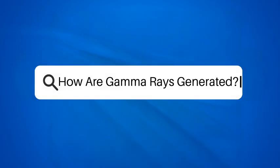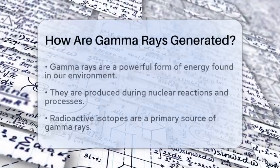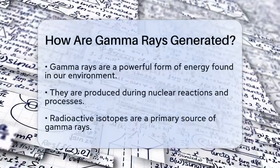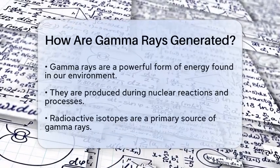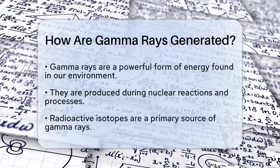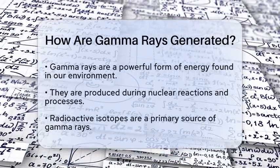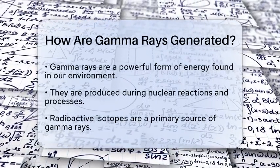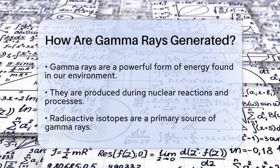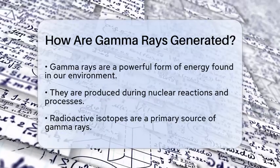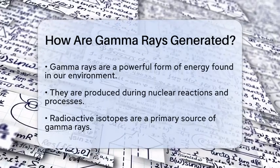How are gamma rays generated? Imagine standing in a dark room filled with invisible energy. You might not see it, but it is all around you, waiting to be discovered. One of the most powerful forms of this energy is gamma radiation. But how exactly do these high energy rays come into existence?